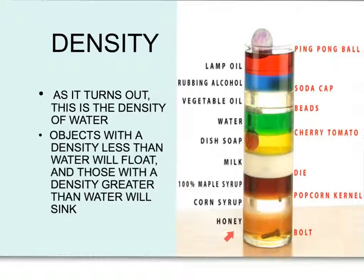Honey has the greatest density, so it forms on bottom. Lamp oil has the lightest density, so it separates and sets on top. We can go from our smallest density to our greatest density.